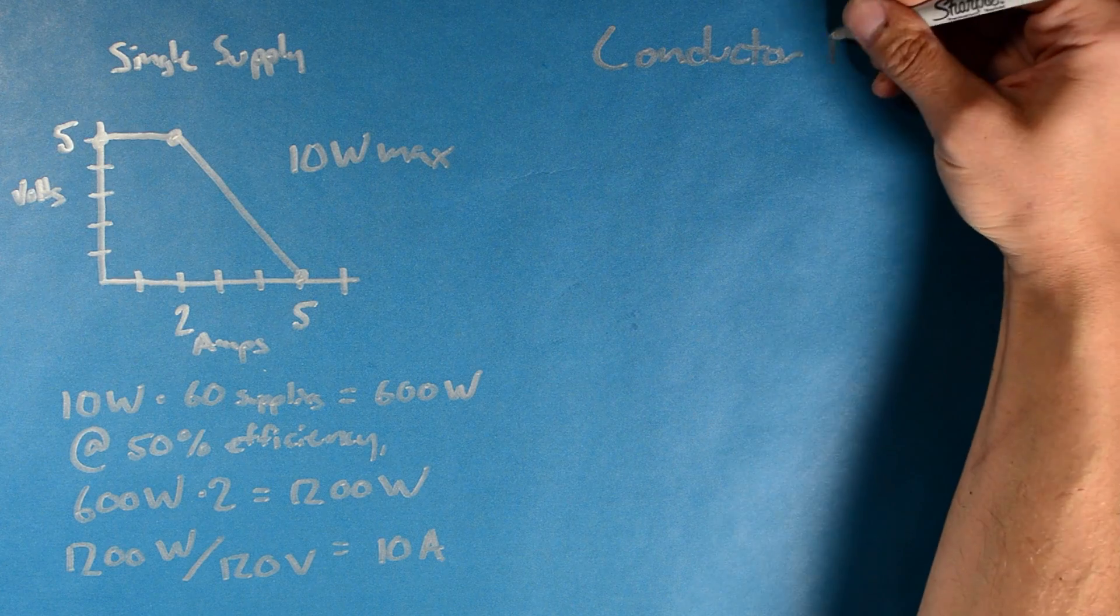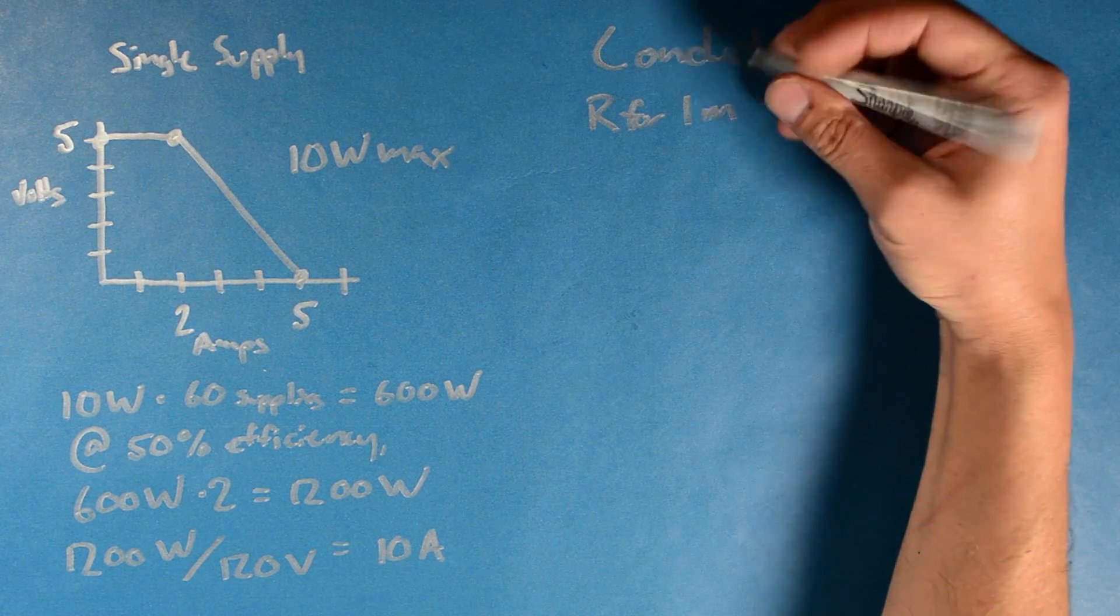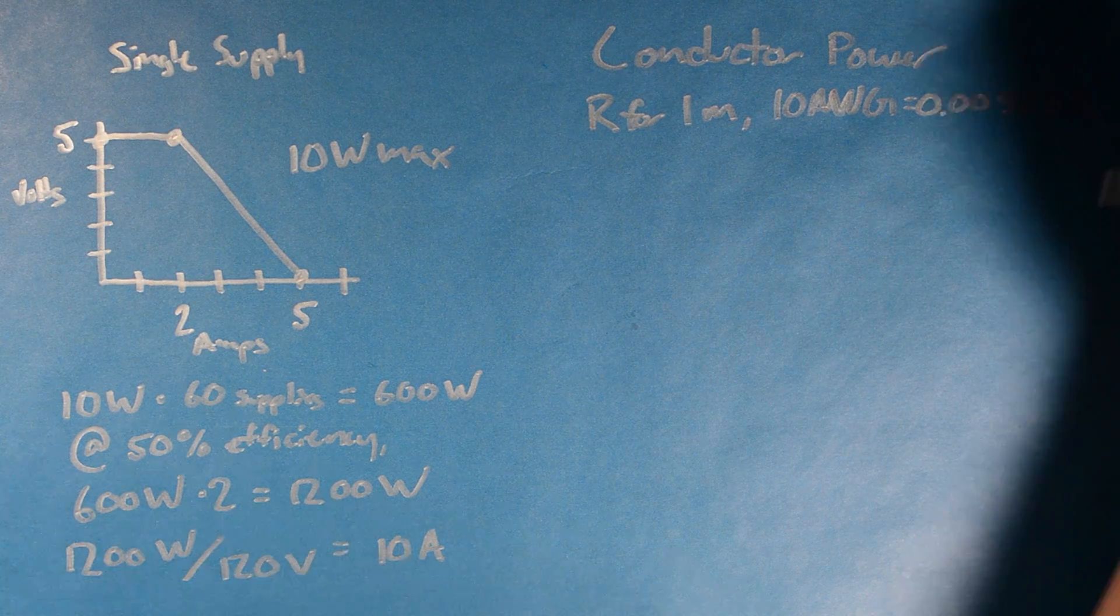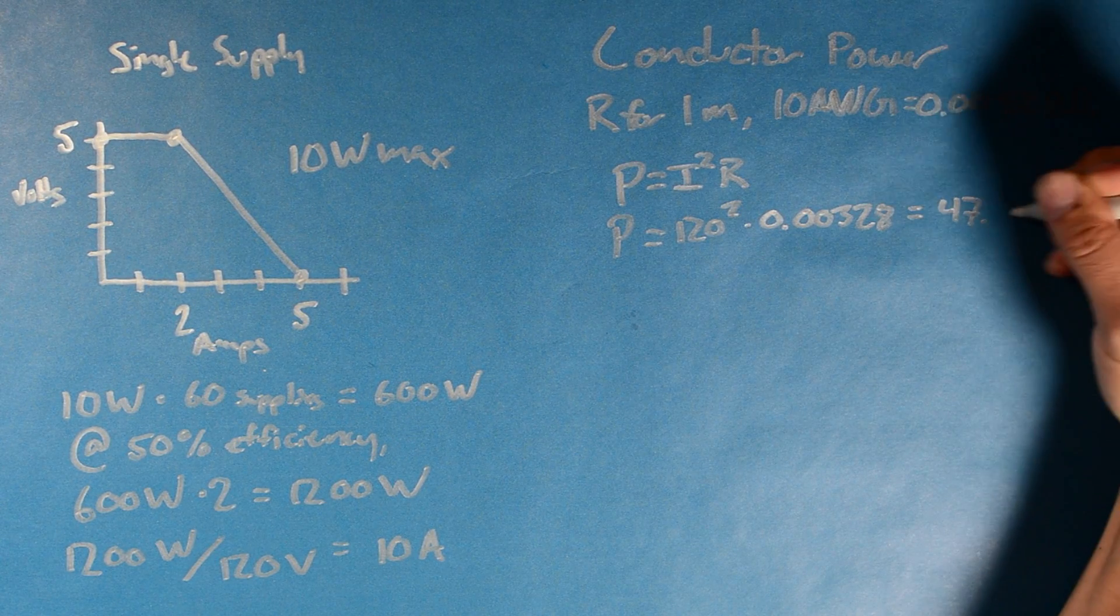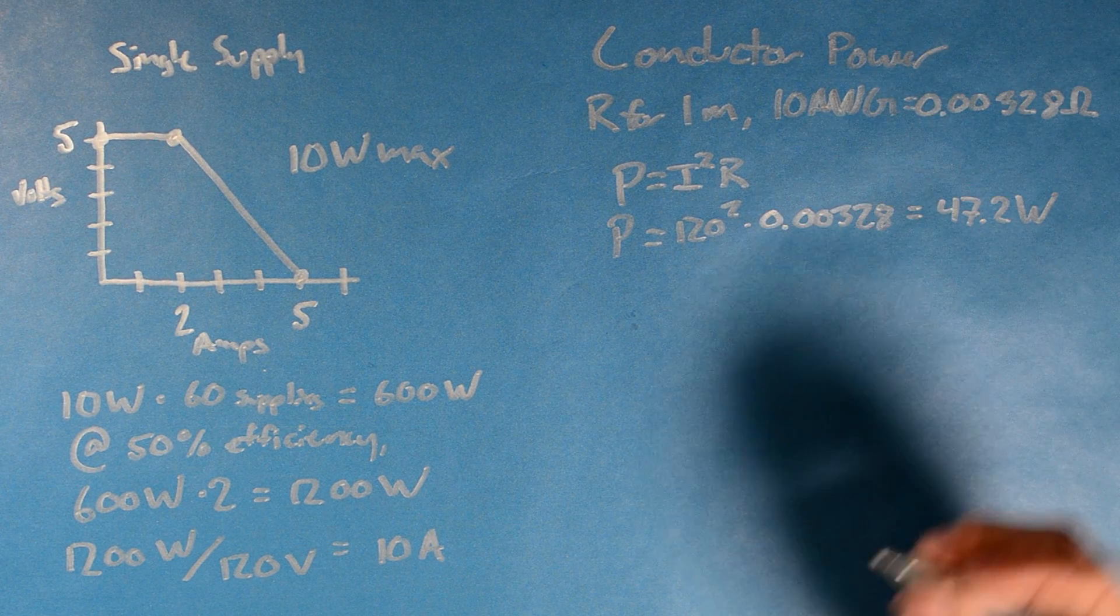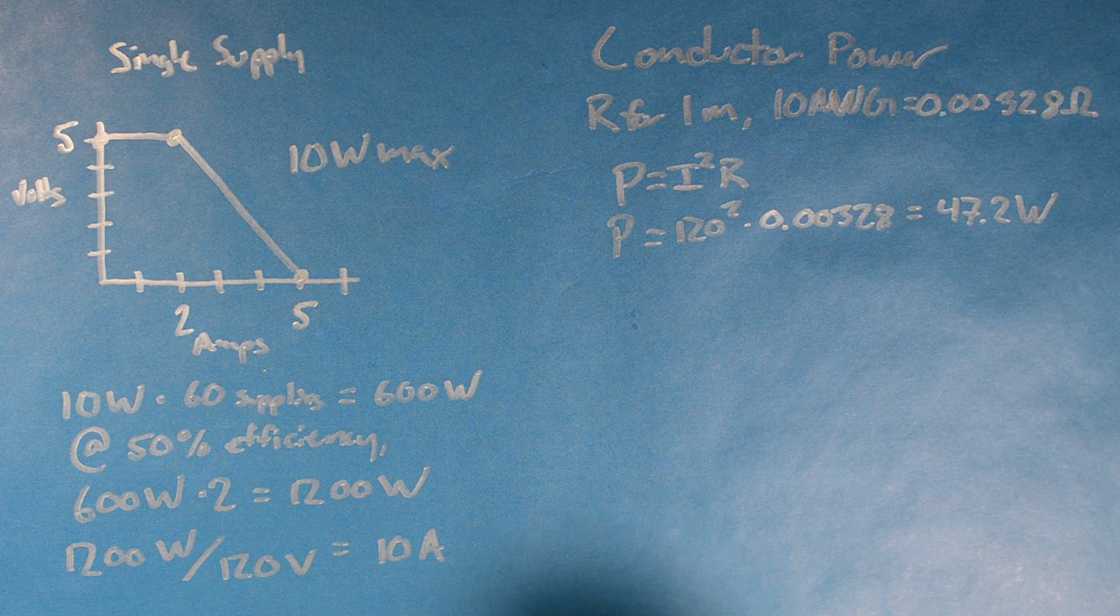We'll need to deliver this current somewhere, so let's look at the conductor. The resistance of a meter of 10 gauge wire is a few milli-ohms. So with I squared R, and at 120 amps, our conductor must dissipate 47 watts. This is about the energy a soldering iron can put out, but over a great surface area. It'll get hot, but not too bad.